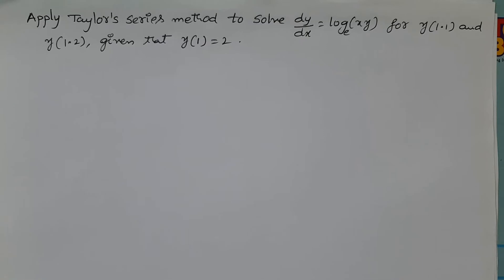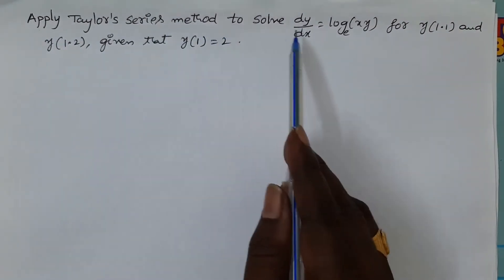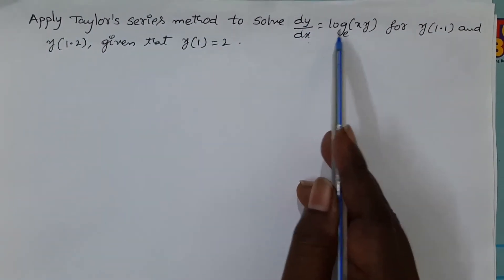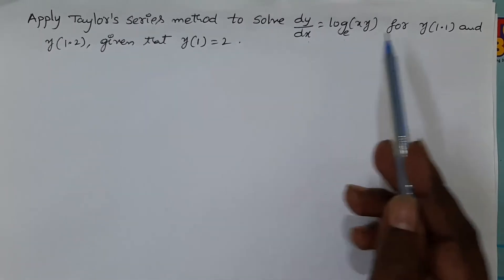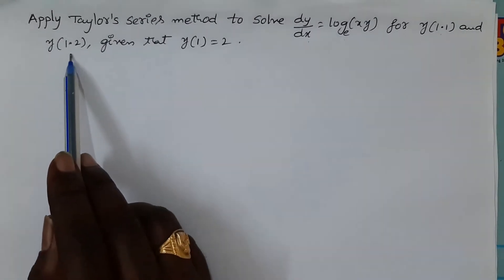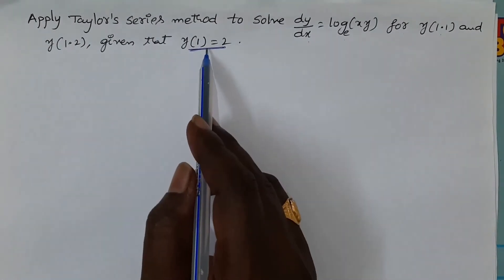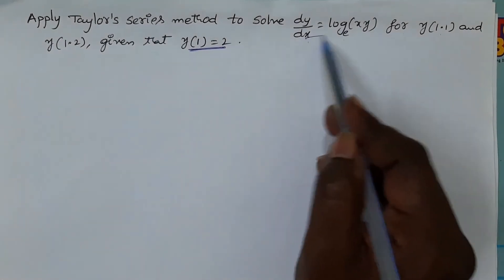Hi everyone, welcome back to our channel. In this video I would like to give another example on Taylor series method to solve a given initial value problem. The problem is: apply Taylor series method to solve dy/dx = ln(xy) for y(1.1) and y(1.2), given that y(1) = 2, which is the initial condition.